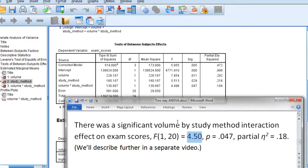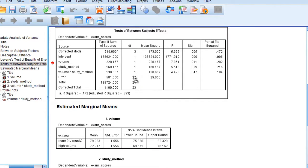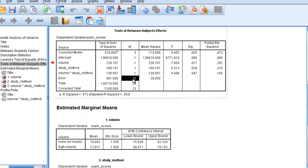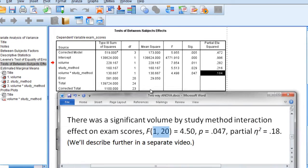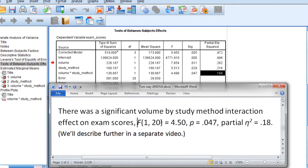Let's go ahead and take a look at that in our source table. So we said we had F of 1 and 20 degrees of freedom, that's these values right here, 1 and 20. And then we have an F of 4.50 rounding, p of .047, and partial eta-squared of .18, which you can see we have right here in our written results. So that's where these values come from.